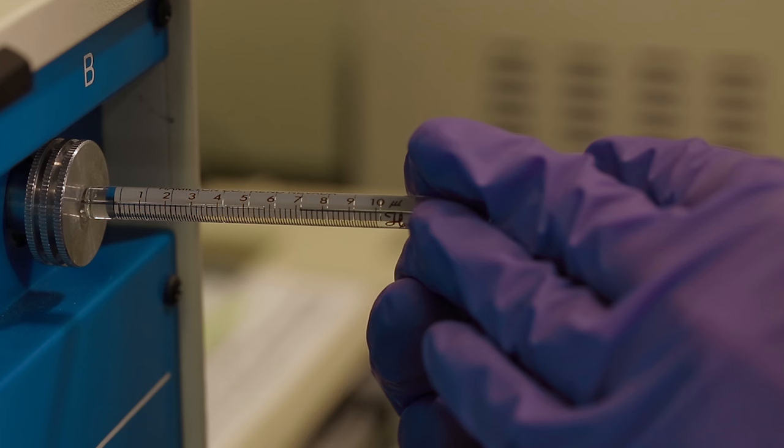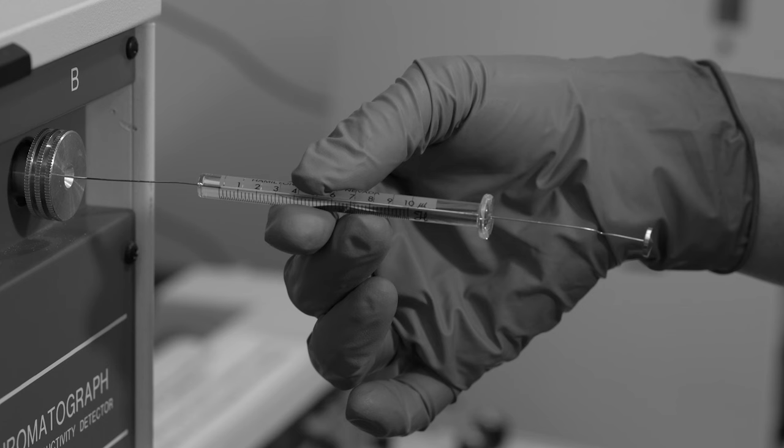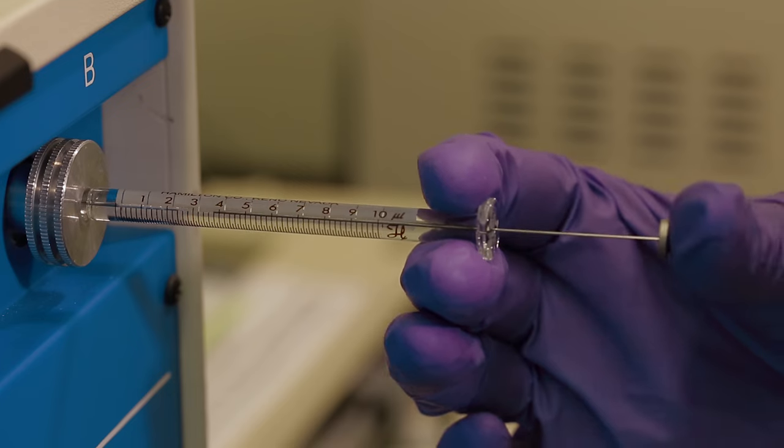Continue until the glass is flush with the injection port. Be careful not to bend the syringe. You can now inject your sample into the gas chromatograph.